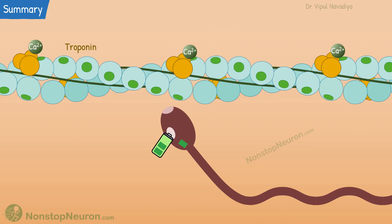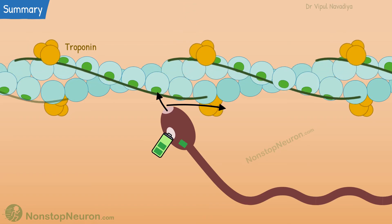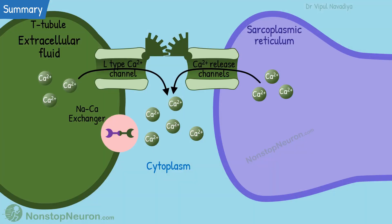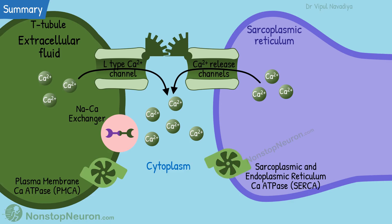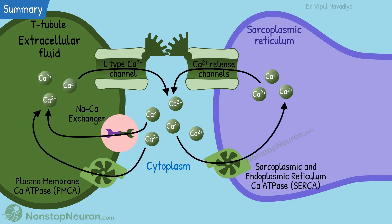Calcium binding moves the tropomyosin away from the binding site for myosin. The myosin head binds and pulls the actin towards the center of the sarcomere. The cross-bridge cycle keeps repeating as long as calcium concentration stays high and the binding site on actin is exposed. Eventually calcium is released from troponin and the cycle stops. The sodium-calcium exchanger and calcium pumps on the plasma membrane and SERCA on the sarcoplasmic reticulum move calcium out of the cytoplasm, decreasing cytosolic concentration, which is the reason for the release of calcium from troponin in the first place.